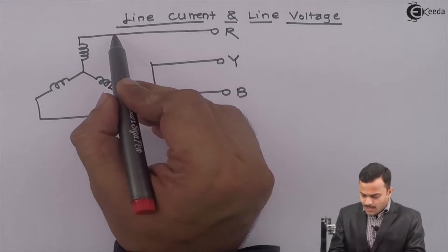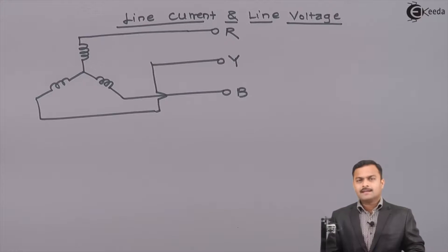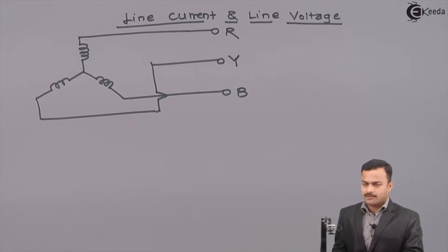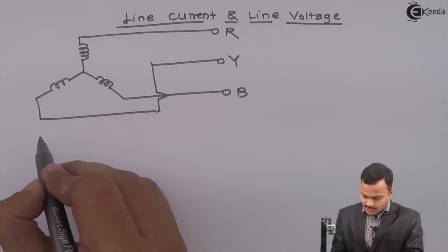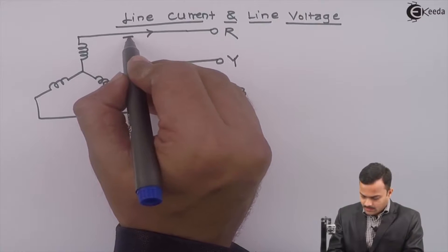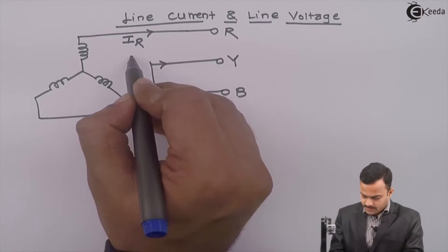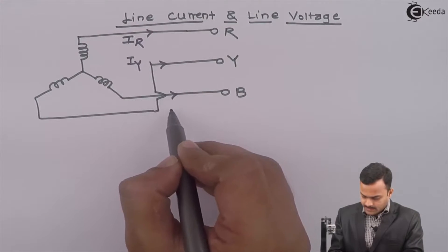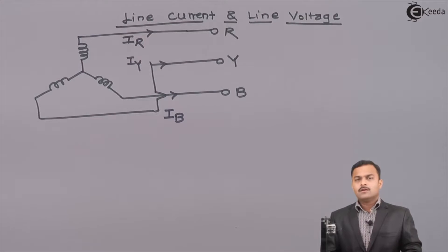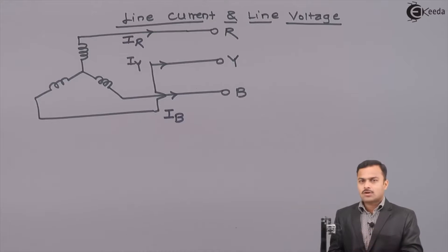This part is nothing but a line. Current carried by any line is called as line current — a very simple definition. So this will be IR, this will be IY, and the current flowing through the B line is IB.